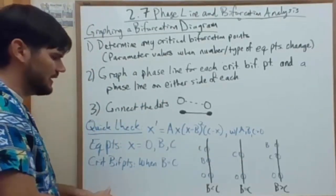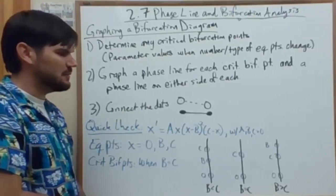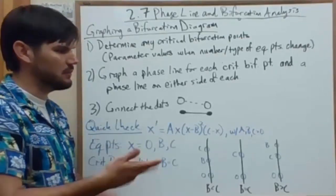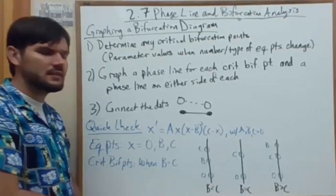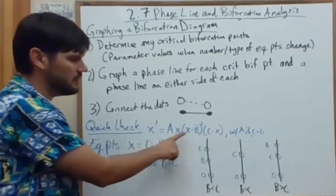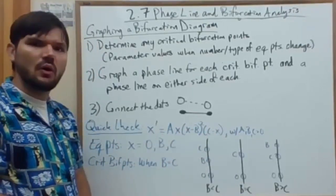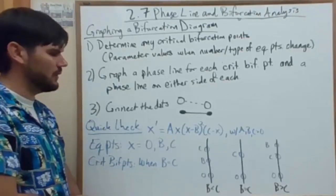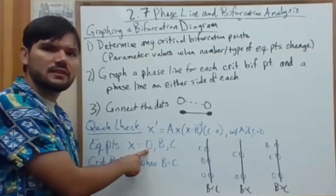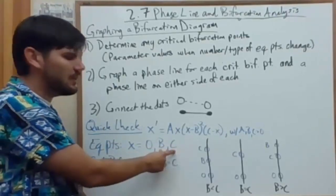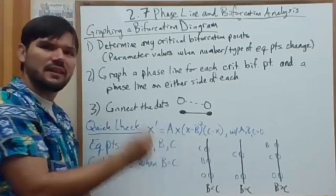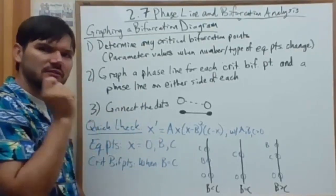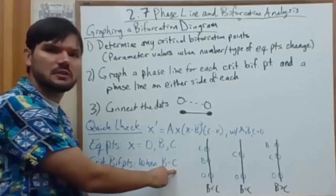Let's do a quick check example here. This is x prime equals ax times x minus b squared times c minus x, with a, b, and c all being positive, but we don't know exactly their order. So the equilibrium points based on the factored form are zero, b, and c. So are there any parameter values which change the number or type of equilibrium point? Well, we know that b and c are different than zero, so that is always distinct, but b and c could equal each other. And when they do, you only have two equilibrium points. So that right there is the critical bifurcation point. It's when a parameter b equals a parameter c.